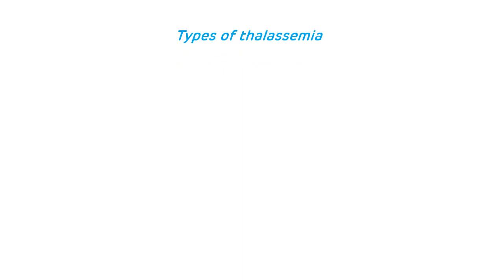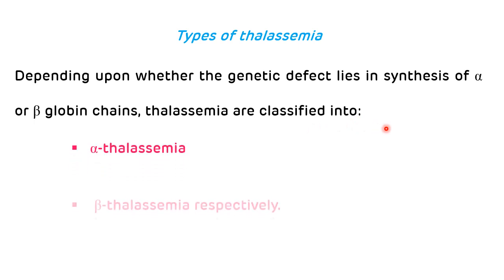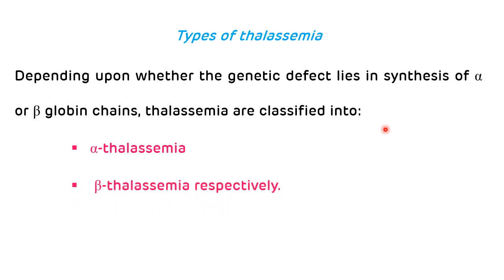Now, types of thalassemia. Depending upon the genetic defect which lies in the synthesis of either alpha or beta globin chains, thalassemia is classified into two main types: alpha thalassemia and beta thalassemia. If there is a defect in the synthesis of alpha globin chains, it is called alpha thalassemia. If there is a defect in beta globin chains, it is called beta thalassemia.